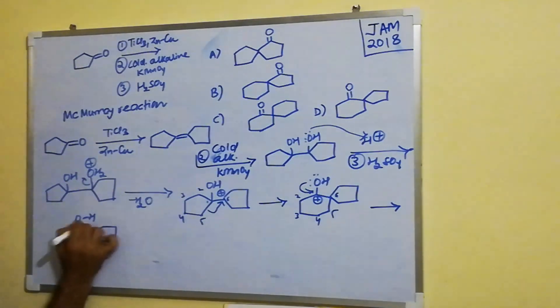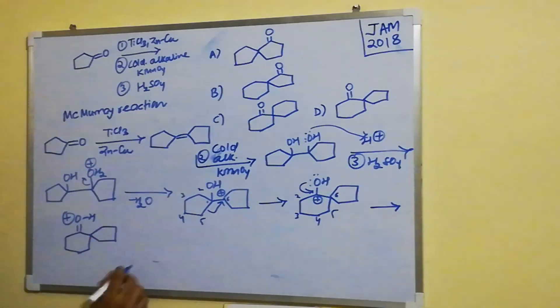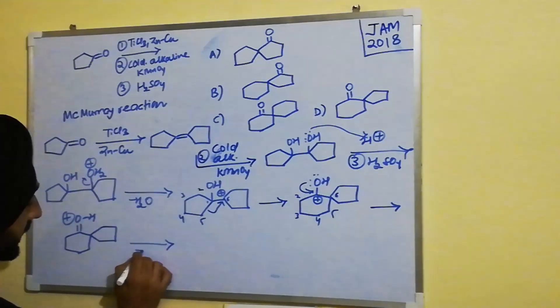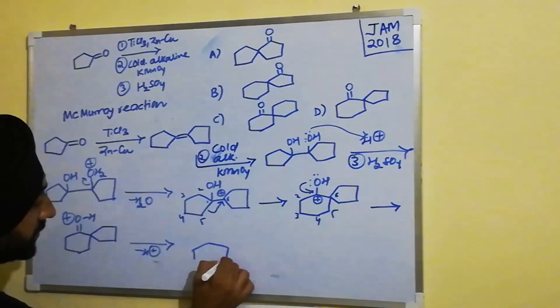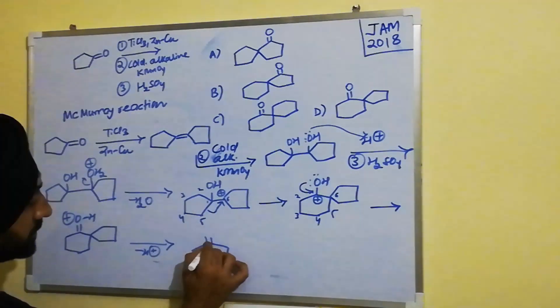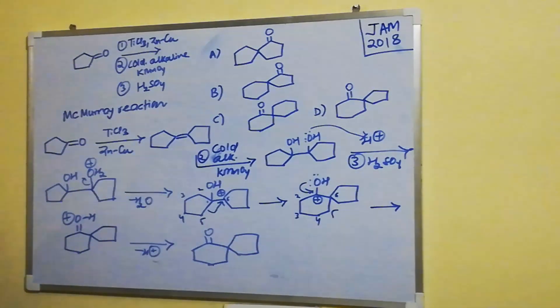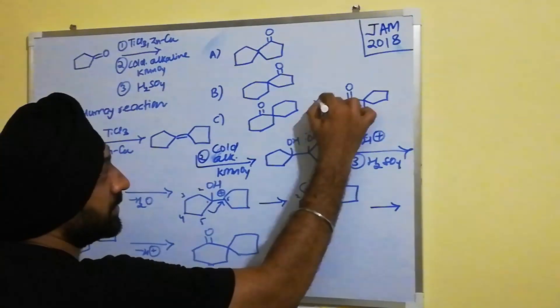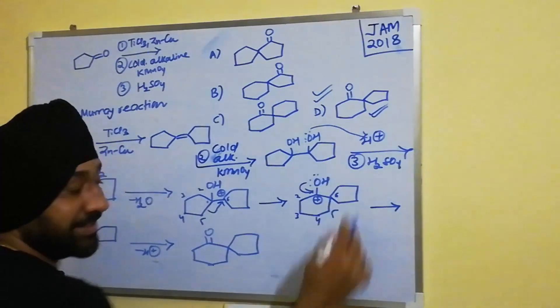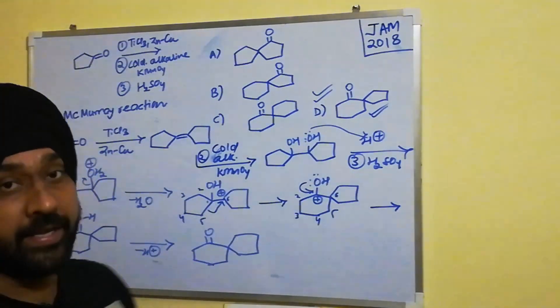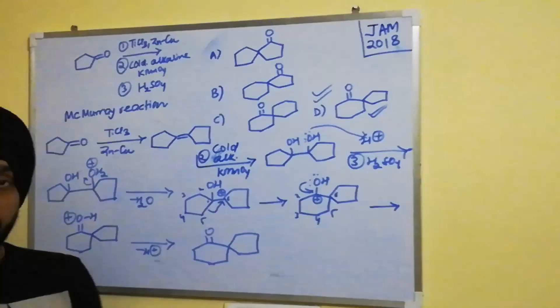And then we have this particular intermediate, and then deprotonation leads to the formation of this ring expanded product. If we look at the options, it clearly matches with option D. So option D is the correct answer.